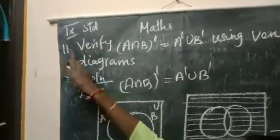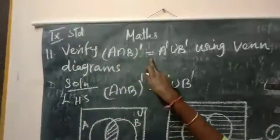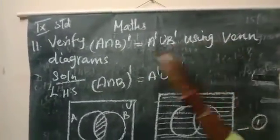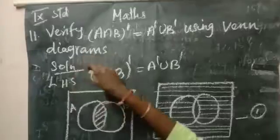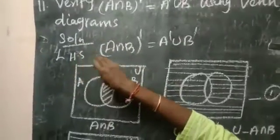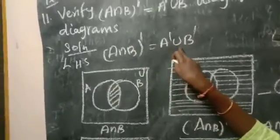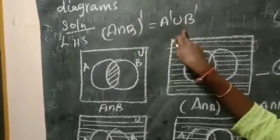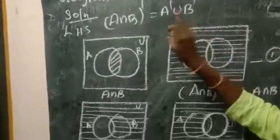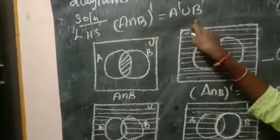Now we see the 11th sum: verify that (A∩B)' is equal to A'∪B' using a Venn diagram. We draw the Venn diagram. (A∩B)' = A'∪B' — this is De Morgan's Law for complementation. This is the LHS side and this is the RHS side.